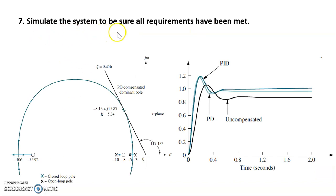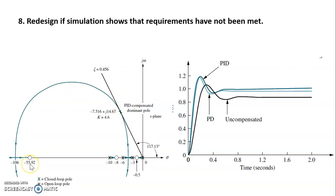The final step is to simulate the system to confirm all requirements have been met. The simulation result shows the PID compensated system compared to the uncompensated system, confirming that the PID controller has improved the peak time by two-thirds and eliminated the steady state error for a step input. That's all for PID controller design. Thank you very much.